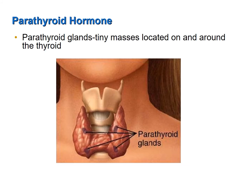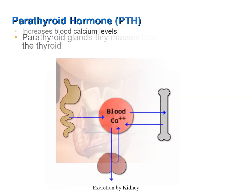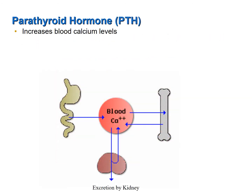Parathyroid hormone is secreted by the parathyroid glands. Para means beside, and these parathyroid glands are located on or around the thyroid gland. Parathyroid hormone, like vitamin D, increases blood calcium levels.